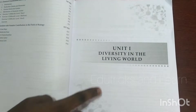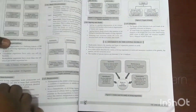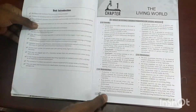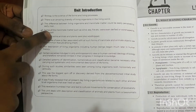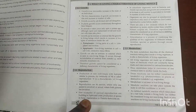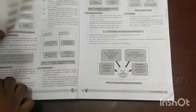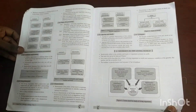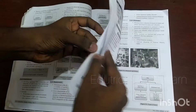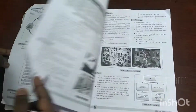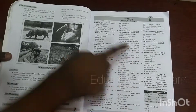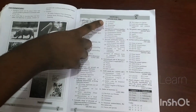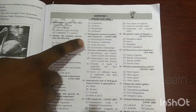In Unit 1, Diversity in the Living World, they have given a unit introduction which gives an overview of the unit. For the first chapter, The Living World, they provide brief notes with many diagrams — mostly mind maps, because studying with mind maps is very easy.